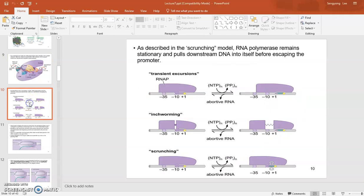When RNA polymerase is moving through the DNA template strand, there are different models explaining that. If you look at this scrunching model, RNA polymerase remains kind of stationary and pulls down the DNA like this. That's how it moves towards the other direction to transcribe the gene.